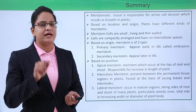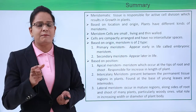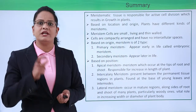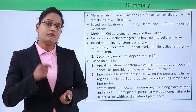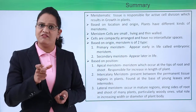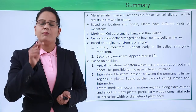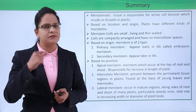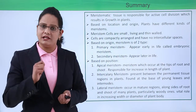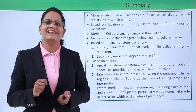To summarize: meristematic tissue is the tissue responsible for active cell division. The region of the plant where active cell division happens is known as meristem. Based on origin, it is of two types — primary meristem and secondary meristem. All meristematic cells are small in size, living and thin-walled, compactly arranged, with a bigger nucleus and no intercellular space. On the basis of position, they are further divided into apical meristem, intercalary meristem, and lateral meristem, which will be discussed in detail in upcoming videos. Thank you very much.